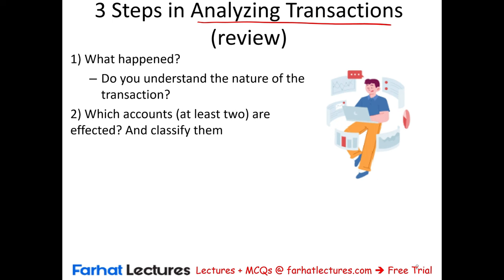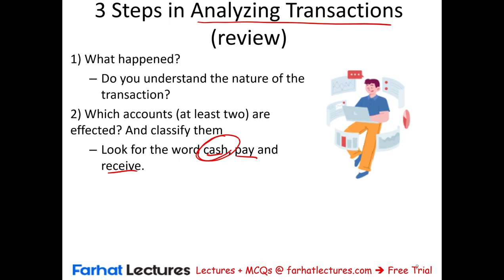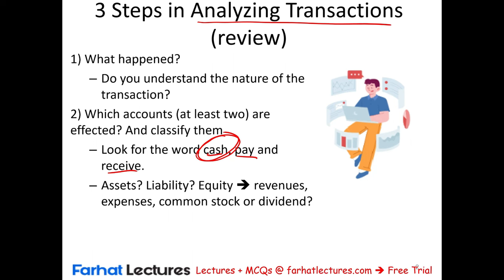We need to classify the accounts. Look for the words cash, pay, and receive. In Financial Accounting 101, most transactions go through cash, so at least we can identify one account. Once you identify one account, the other is easier to figure out. Then classify them — for example, cash is an asset. What's the other account? Is it an asset, a liability, revenue, an expense, common stock, or dividend?